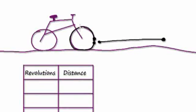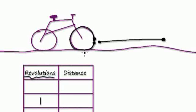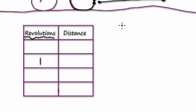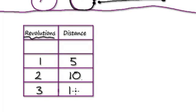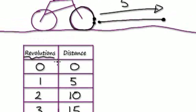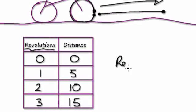Now let's say you've got a bicycle here. Revolutions means the number of turns — one revolution means one turn of a wheel. Let's say one revolution allows you to travel five meters. Two turns of the wheel, you would travel 10 meters. Three revolutions means you travel 15 meters. If you have no revolution, then you're going to have zero distance. In this case, you can say that revolution is directly proportional to the distance traveled.